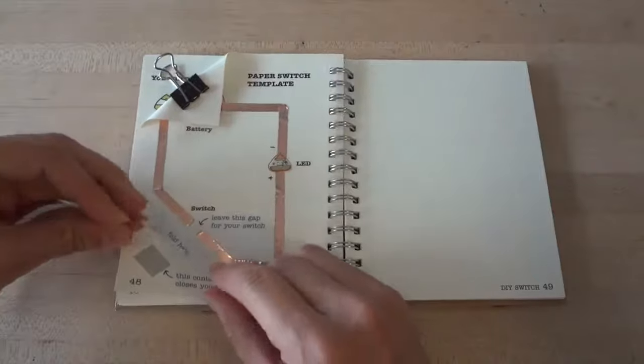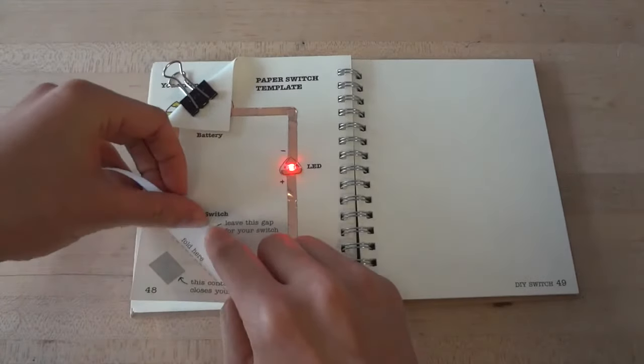When you close this gap with a conductive material, such as the copper tape, the light will turn on.